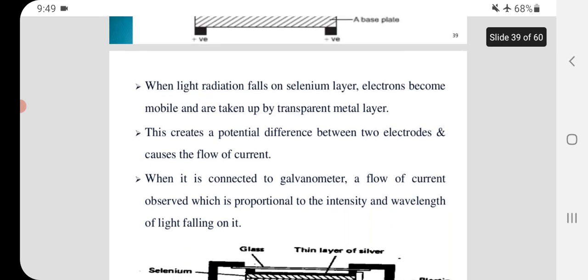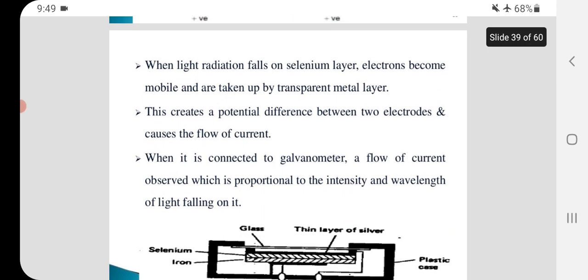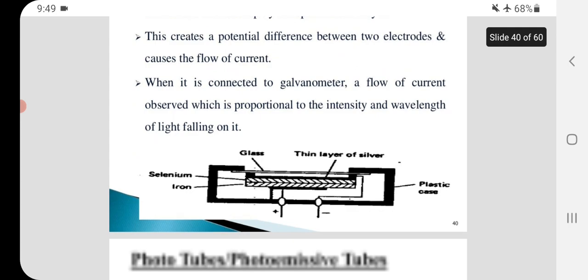When light radiation falls on selenium layer, electrons become mobile and are taken up by transparent metal layer. When it is connected to galvanometer, a flow of current is observed which is proportional to the intensity and wavelength of light falling on it.